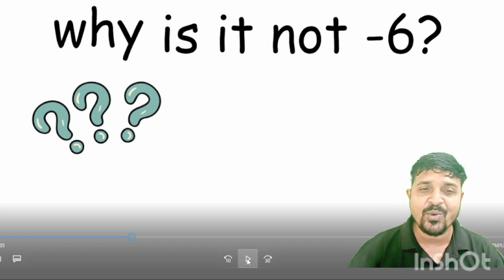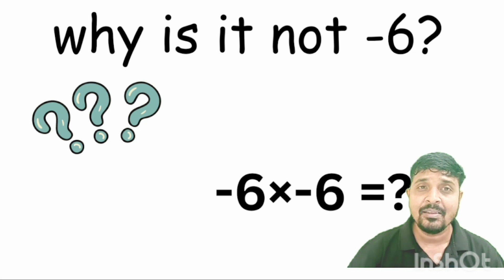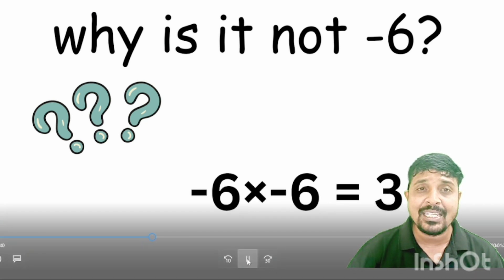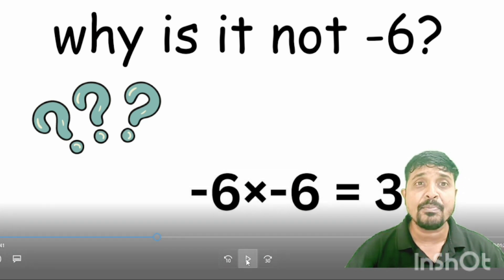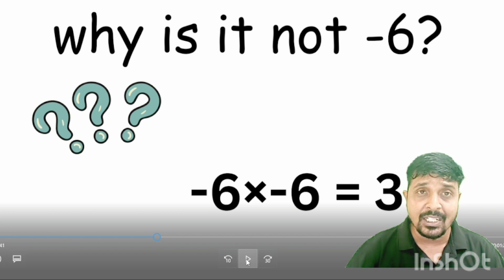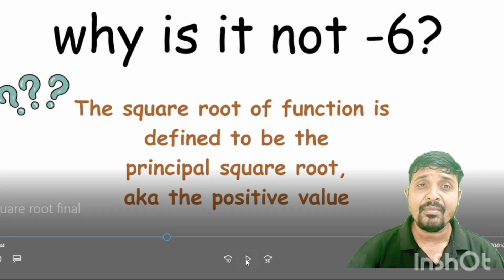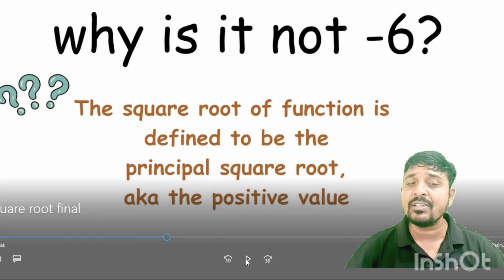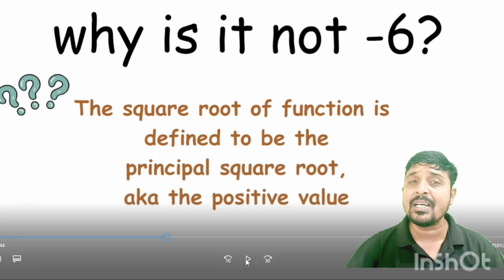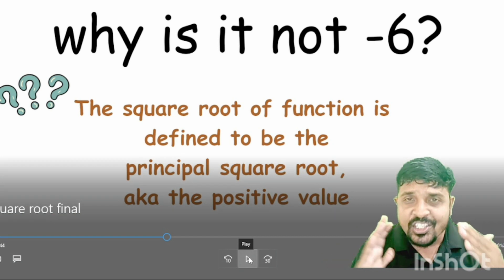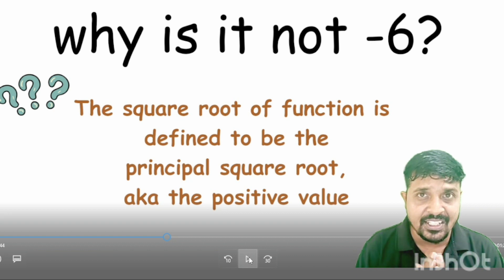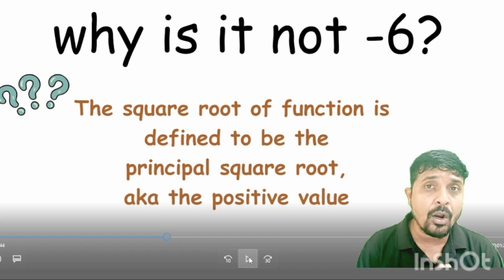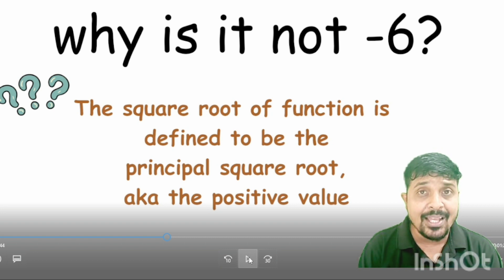Now we are going to discuss why it is not minus 6, even though minus 6 times minus 6 is 36. It satisfies the condition, but the square root function is defined to be the principal square root. That means it indicates only the positive value and not the negative value. So if somebody is asking you what is root over 36, your answer should be 6 and not minus 6.